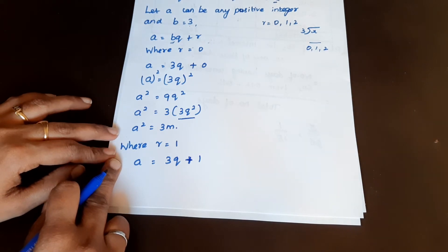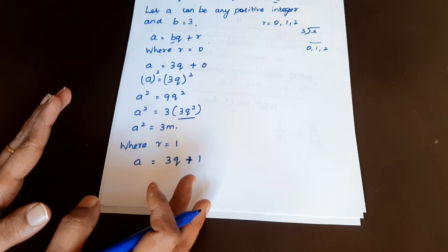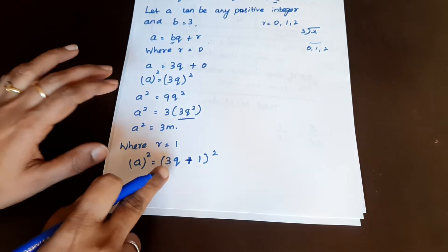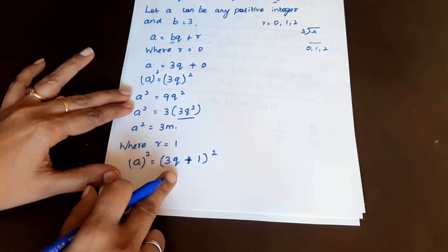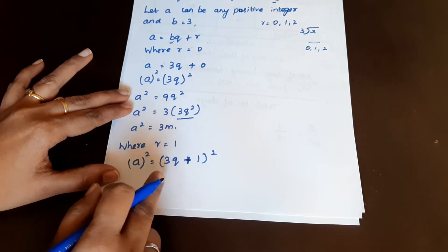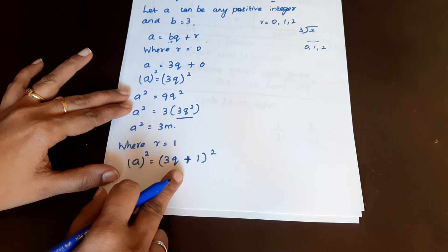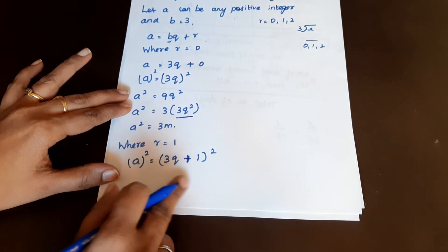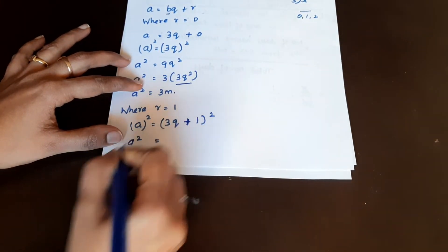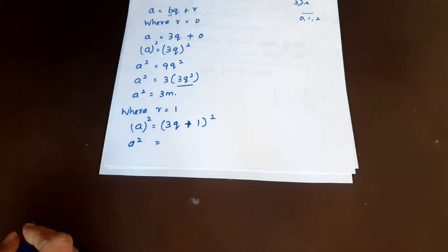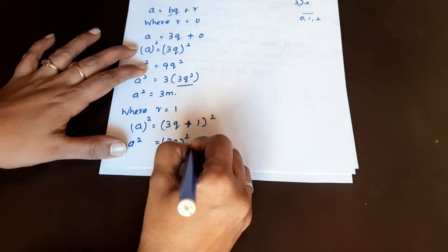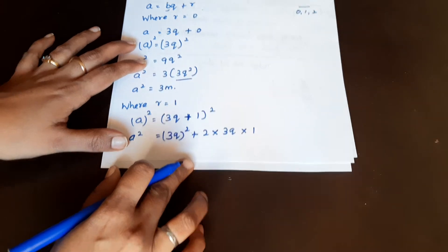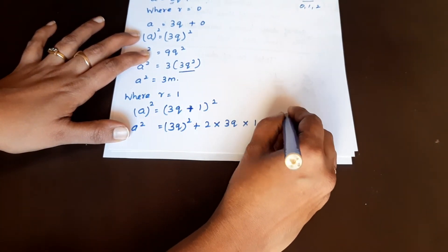The square of any positive integer — we need to square both sides. So we square a. Therefore a squared equals (3q+1) whole square. Now we use the algebraic identity (A+B)² = A² + 2AB + B² to expand this expression.